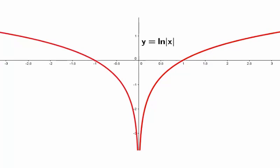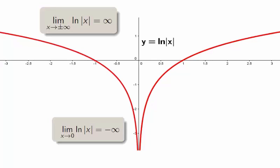Absolute valued logarithmic functions have even symmetry, so the limit as x approaches either infinity is positive infinity. The two-sided limit as x approaches 0 is negative infinity.